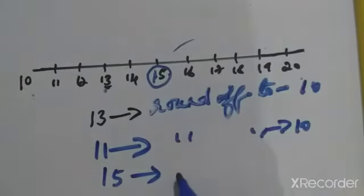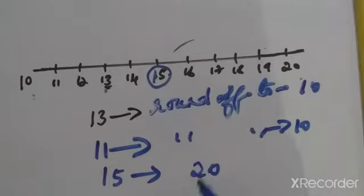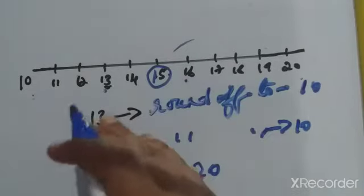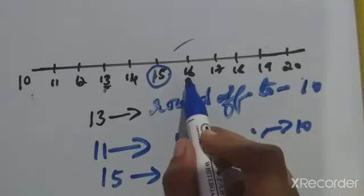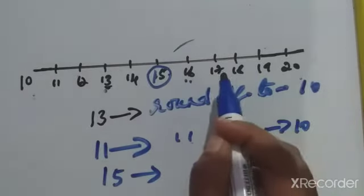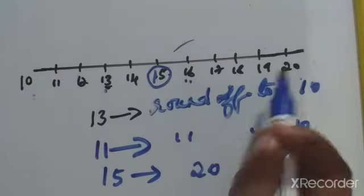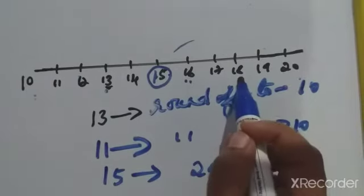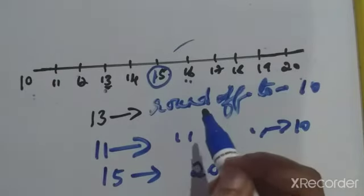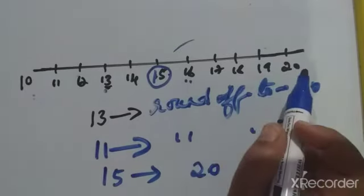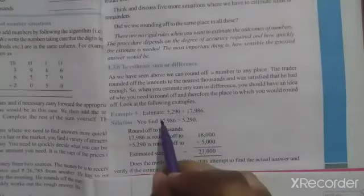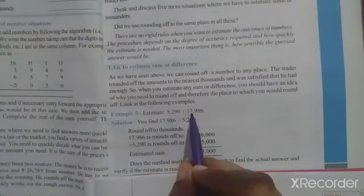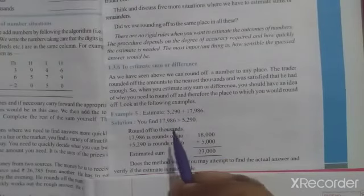Exact 15 divides equally between 10 and 20, so we move to the greater side — the round off of 15 is 20. Round off of 16: since 6 is above 5, we go to the greater side, so round off of 16 is 20. Similarly, round off of 17 is 20, round off of 18 is 20, and round off of 19 is 20.